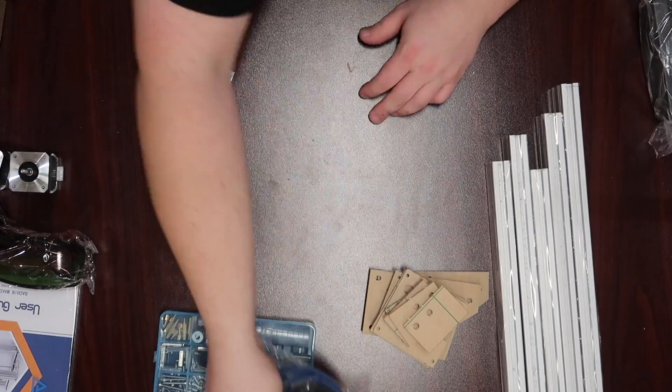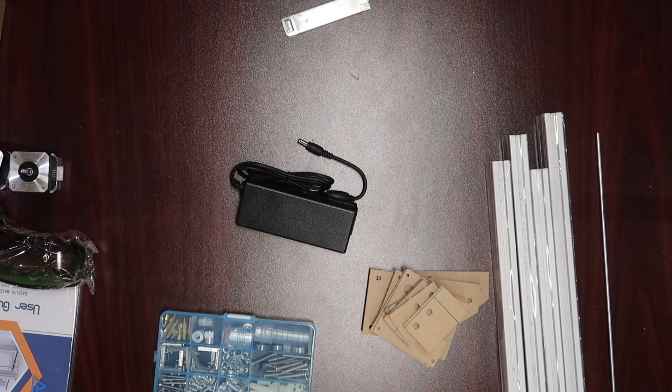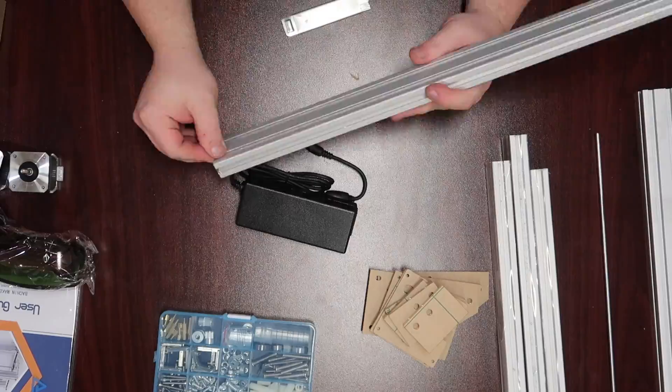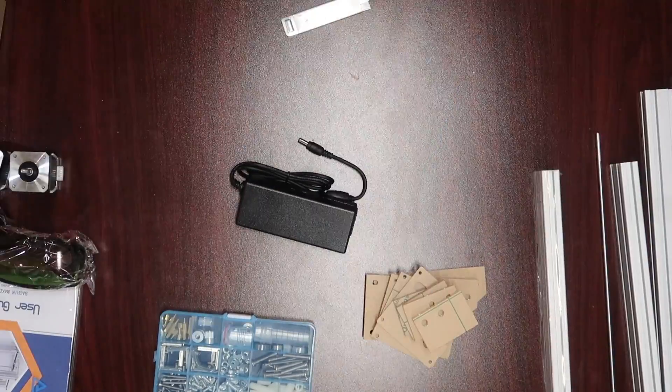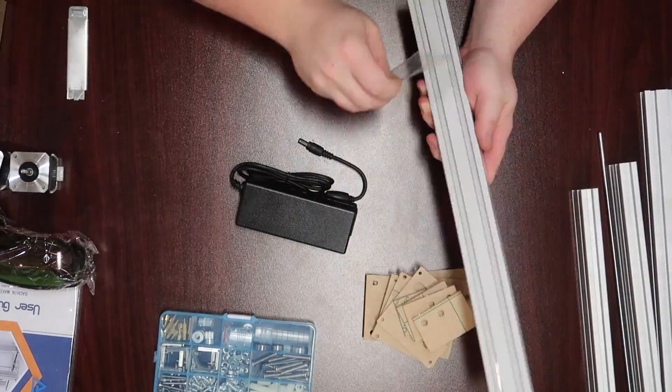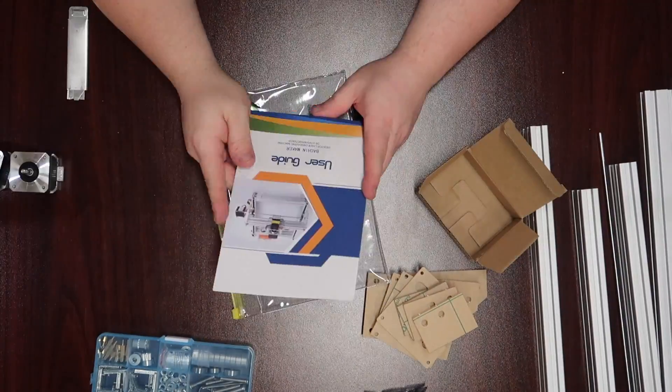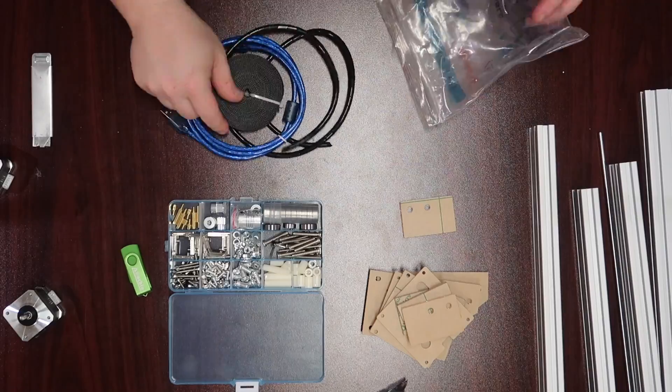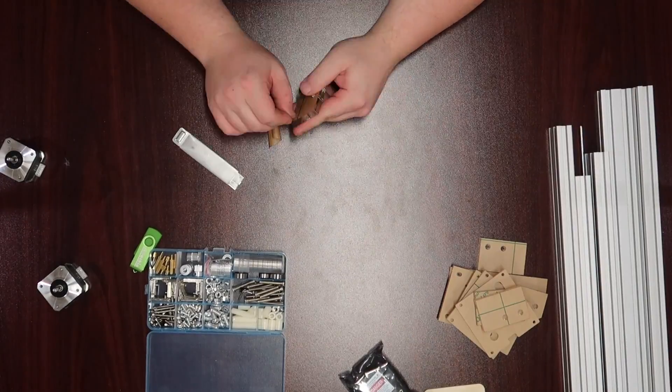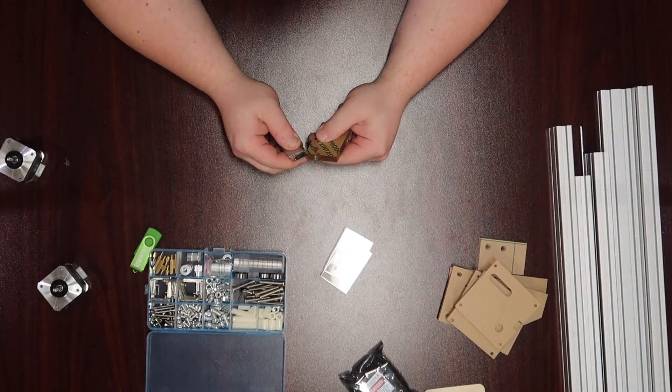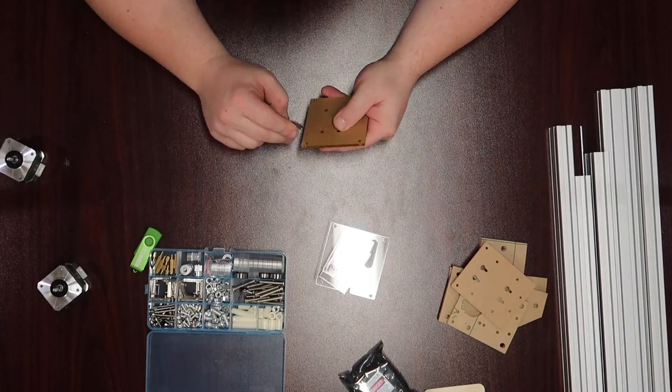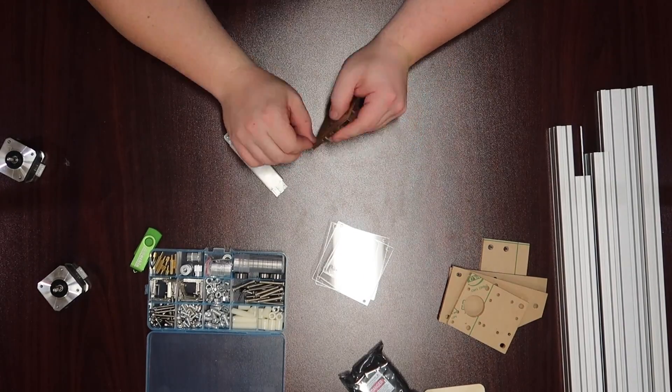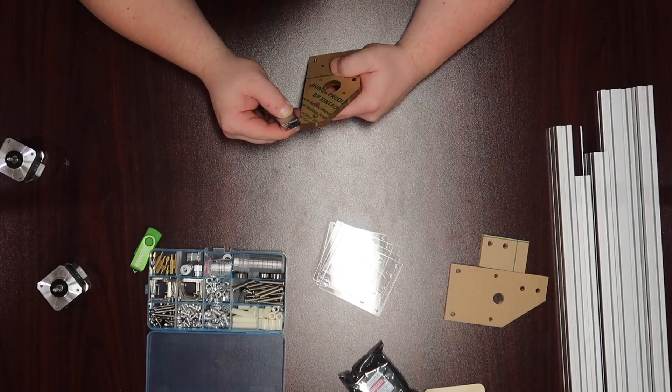This kit comes with pretty much everything you need to assemble it. It comes with the allen wrenches, the USB cable, the power supply. The only thing that you're going to need is either a really small wrench or a pair of pliers to be able to hold the nuts when you're tightening the screws. The hardest part of this build was sitting here peeling off all this film from these pieces. It just didn't want to come off, but it wasn't too bad.